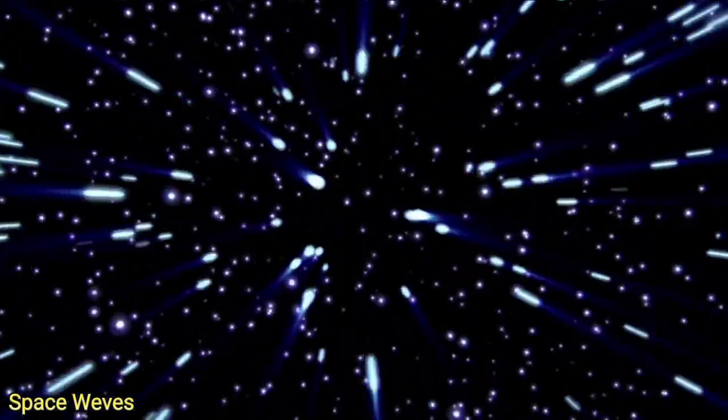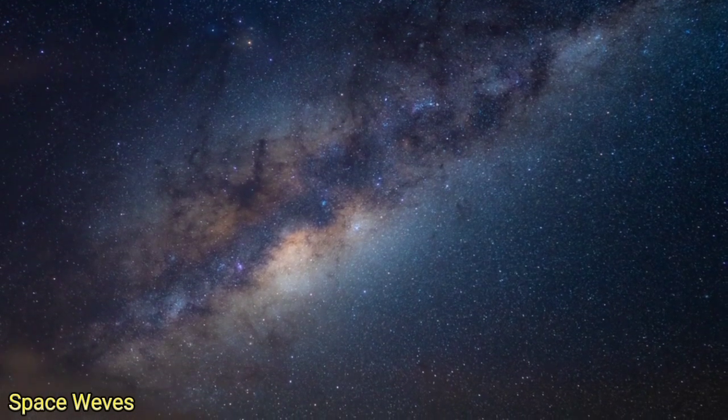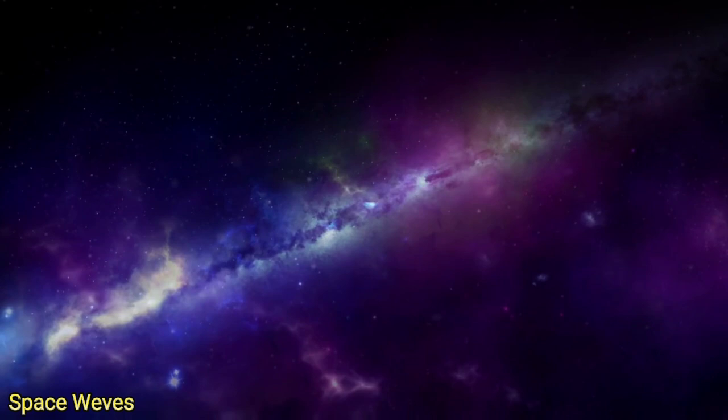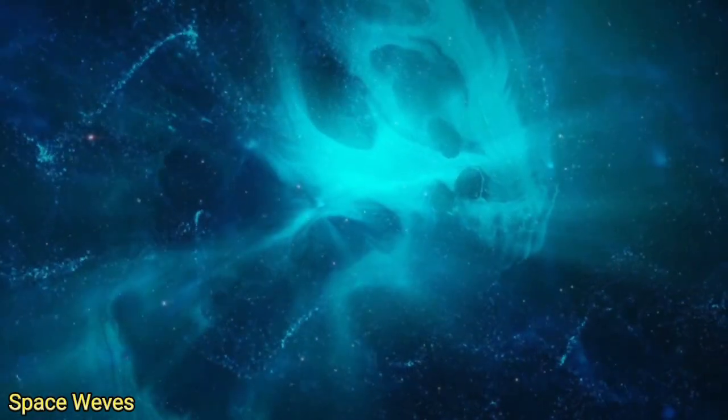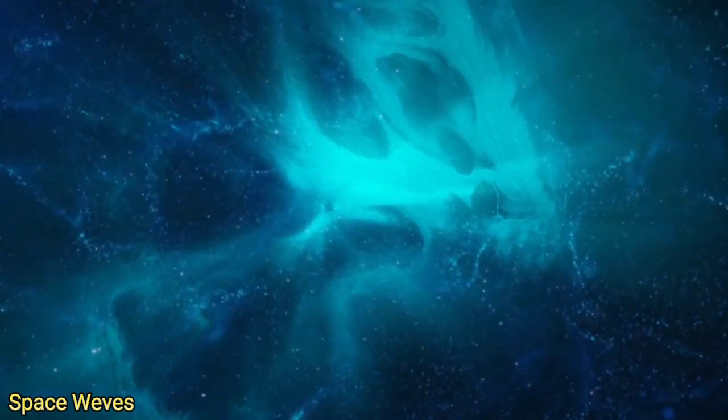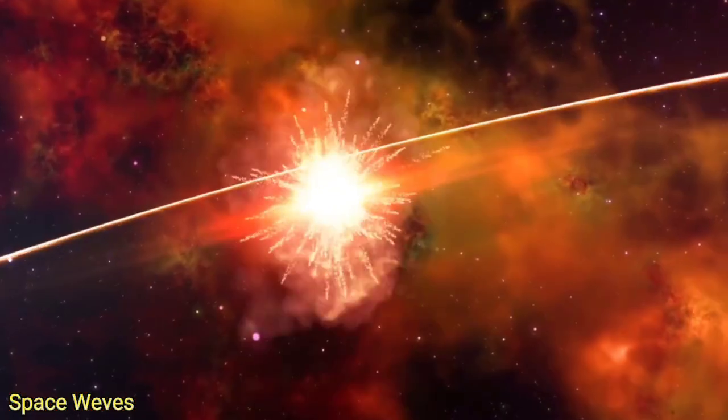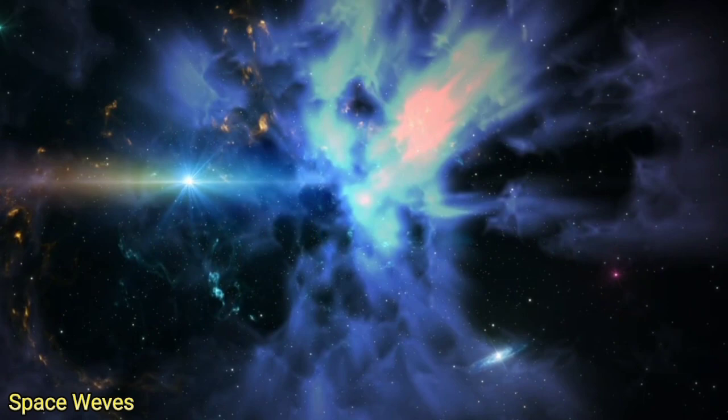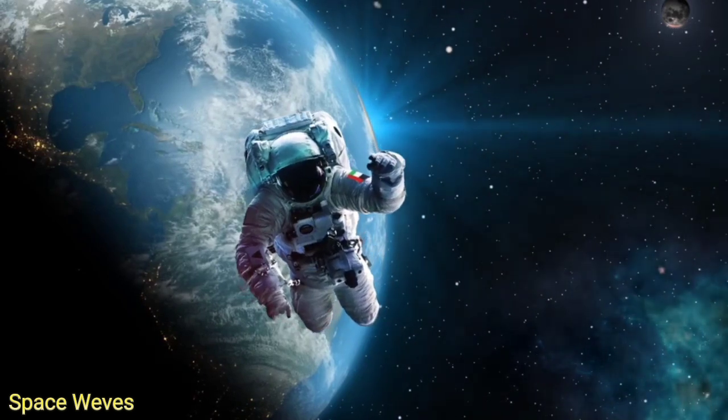If Betelgeuse were to go supernova, it would be one of the most spectacular astronomical events in human history. The explosion would briefly make the star as bright as a full moon, visible even in broad daylight. It would remain visible for weeks or even months before gradually fading. The event would release an immense amount of energy, but astronomers reassure us that Earth would be safe from harmful radiation due to Betelgeuse's distance of approximately 642 light years. Despite the uncertainty about when the explosion will occur, astronomers are excited about the opportunity to witness a nearby supernova in real time. The James Webb Space Telescope, along with other advanced observatories, will continue to monitor Betelgeuse closely, searching for any new signs of instability.